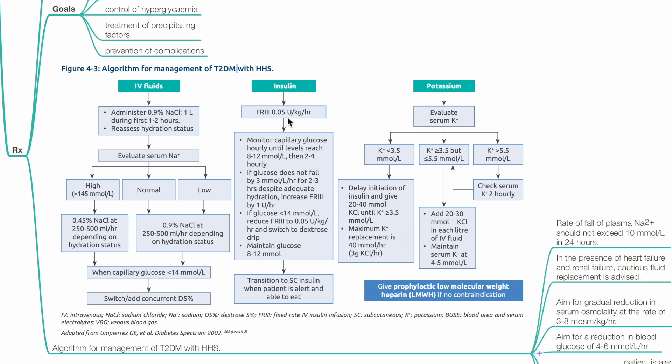Fixed rate IV insulin infusion, 0.05 units per kg per hour. Monitor capillary glucose hourly until levels reach 8-12 mmol per liter, then 2-4 hourly capillary glucose monitoring. If glucose does not fall by 3 mmol per liter per hour for 2-3 hours despite adequate hydration, increase fixed rate IV insulin infusion by 1 unit per hour, check infusion pump and IV lines. If glucose is less than 14 mmol per liter, reduce fixed rate insulin to 0.05 unit per kg per hour and switch to dextrose drip. Maintain glucose 8-12 mmol per liter. Transition to subcutaneous insulin when patient is alert and able to eat.